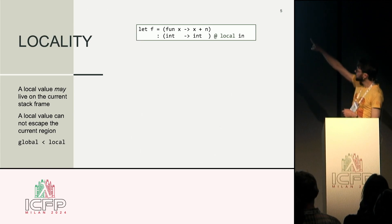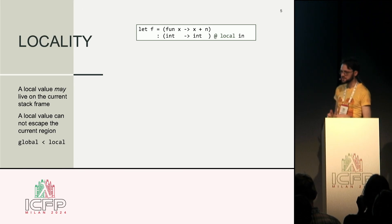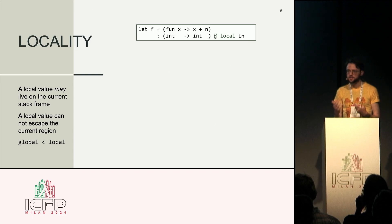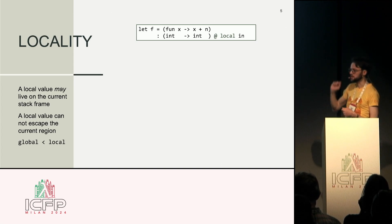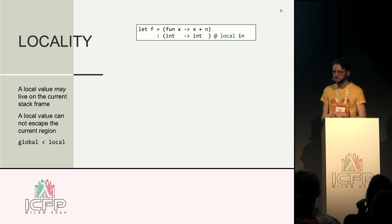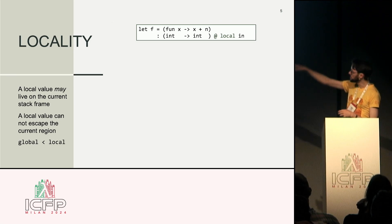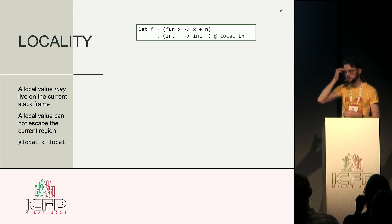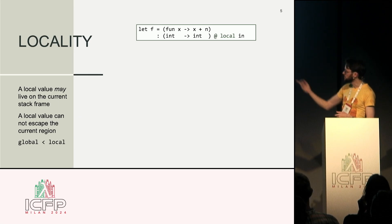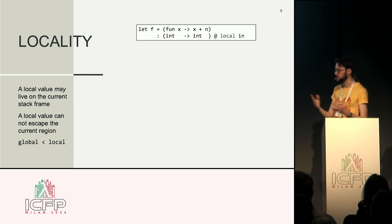To enforce that pointers go the right way, we introduce something called a mode for locality. Let's say we want to have the function f = x ↦ x + n allocated on the stack. We need to ensure there are no pointers coming from the heap to this value, and we do this by giving it the mode `local`, which sits alongside the type and describes a restriction on this value. A local value may live on the current stack frame, and the restriction is that a local value cannot escape the current region. The opposite of local is global — something without this restriction that can live on the heap.